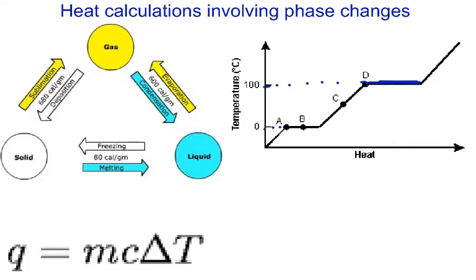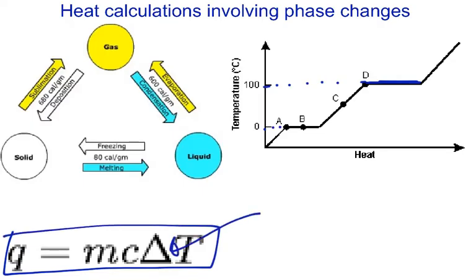So if you have no change in temperature and you use this equation that we used previously here, every time you use this equation, this value of delta T will be zero, and subsequently, the whole equation for Q, the heat equation, would be zero also.